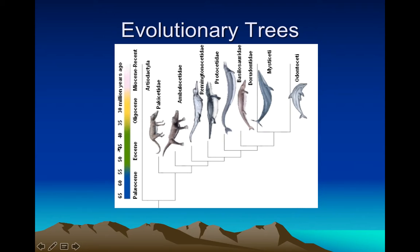Here is an example of a cladogram that shows a timeline on the side, with the most recent at the top. It shows millions of years ago — 30 million, 35 million, 40 million years ago, and so on. As you can see, not all the lines make it to the present. This is an interesting one because it shows the relationship of modern-day dolphins and whales.